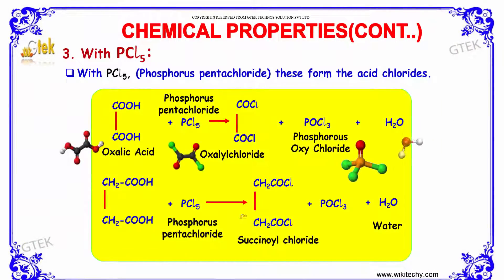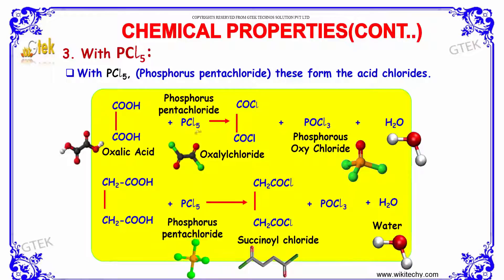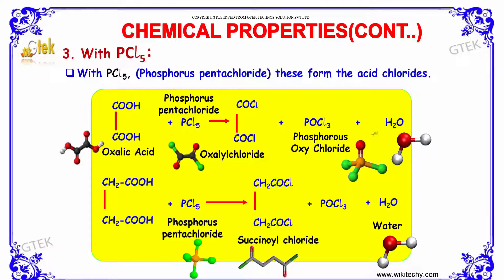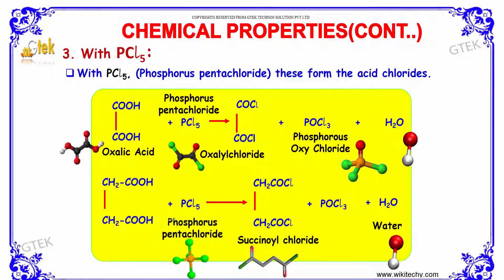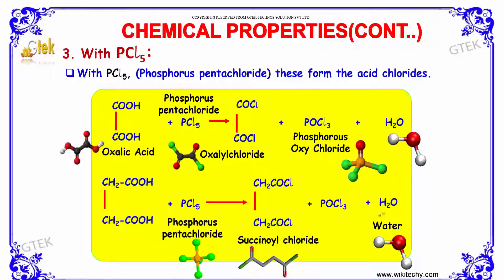Reaction with PCl5: with PCl5 these form the acid chlorides. Oxalic acid when reacted with phosphorous pentachloride produces oxalyl chloride along with phosphorous oxychloride and water. Similarly, succinic acid when reacted with phosphorous pentachloride produces succinyl chloride along with POCl3 and water.